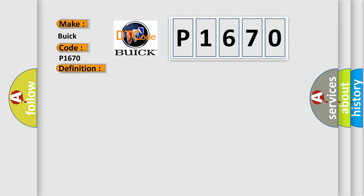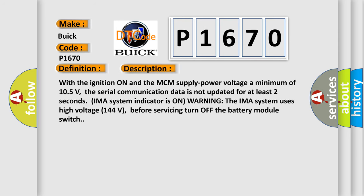And now this is a short description of this DTC code. With the ignition on and the MCM supply power voltage a minimum of 105 volts, the serial communication data is not updated for at least two seconds. IMA system indicator is on warning. The IMA system uses high voltage 144 volts before servicing turn off the battery module switch.